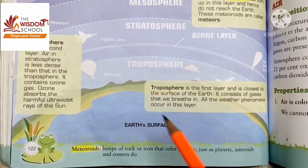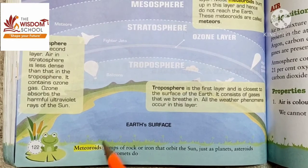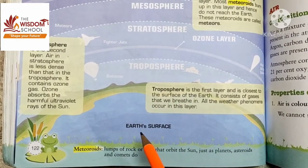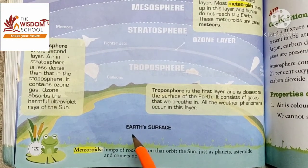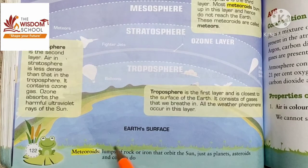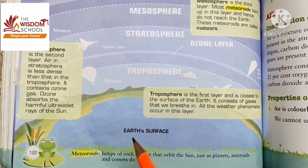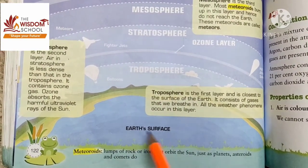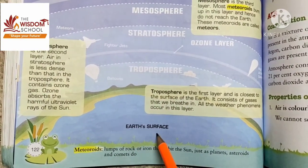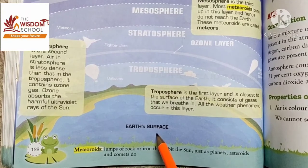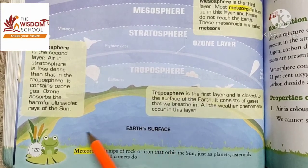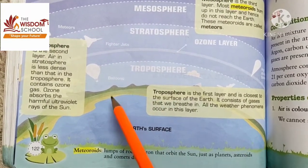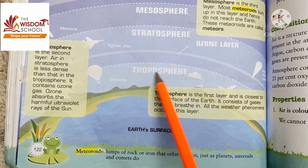Now let us understand about earth's atmosphere with the help of this image. This is earth's surface — this is land. This is the troposphere.